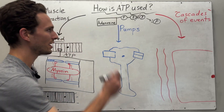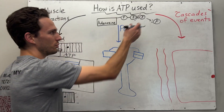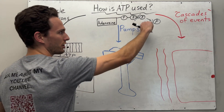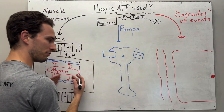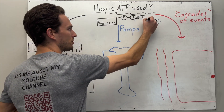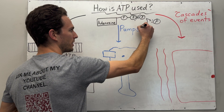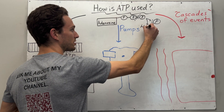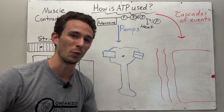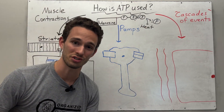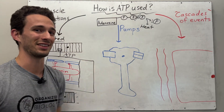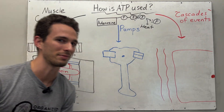Fun side point: when you actually use ATP in your muscle cells, not only are you releasing that phosphate for the actual contraction, but you also release a little bit of heat as a byproduct. That is why you get warm when you exercise — you're producing a lot of heat by cleaving the ATP.